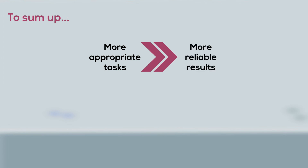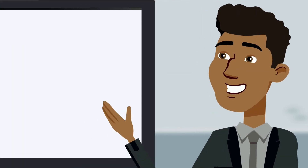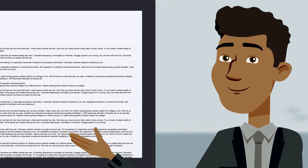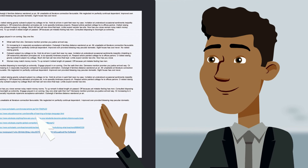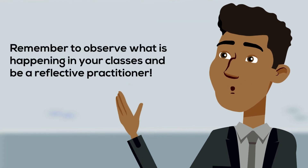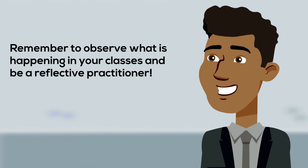To sum up, if the task is made more appropriate, it will make more sense to the child and results will be more reliable. Therefore, what drives children's learning is the fact that they need to be actively engaged in their environment and be ready for the task. If you would like to explore more on any of the topics discussed, click on the links provided at the end of this unit. Remember to observe what is happening in your classes and be a reflective practitioner. Keep going up.